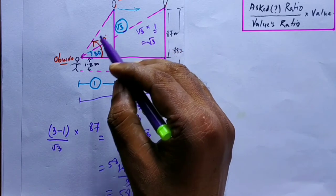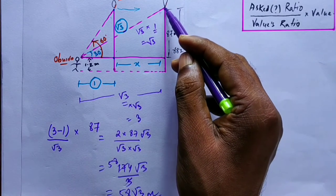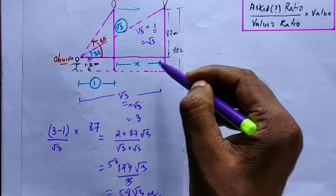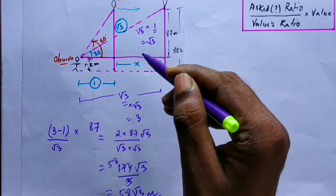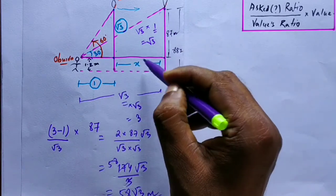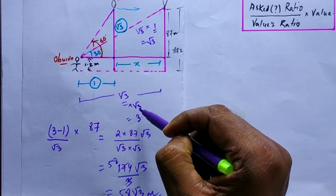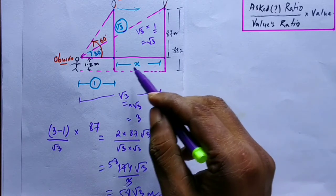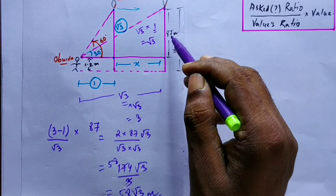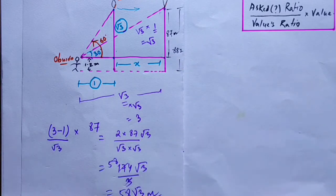Let's verify: the girl observes a balloon at 60° angle of elevation. After some time the balloon moves and the angle becomes 30°. The height from ground is 88.2 m. For the 60° triangle, ratio is √3 and 1; for the 30° triangle, ratio is 1 and √3. Multiplying by √3 to equalize, the X ratio is 3 − 1 = 2. Value is 88.2 − 1.2 = 87. Divided by values ratio √3, we calculate to get 58√3 meters.